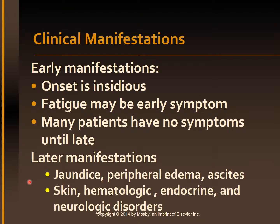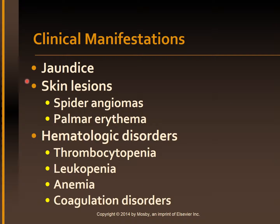Jaundice, peripheral edema, and ascites develop gradually. Other late symptoms include skin lesions, hematologic disorders, endocrine disturbances, and peripheral neuropathies. In the advanced stages, the liver becomes smaller and nodular. Jaundice results from either hepatocellular disease or intrahepatic obstruction. Hepatocellular jaundice occurs because the liver cells cannot excrete bilirubin effectively, so serum bilirubin levels elevate. Intrahepatic obstruction results from edema, fibrosis, or scarring of the hepatic bile channels and bile ducts, which interferes with normal bile and bilirubin excretion. Jaundice also causes pruritus, or itching.